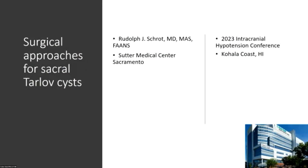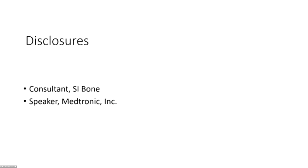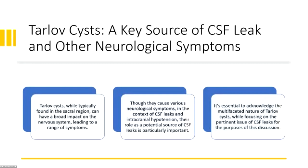I'm a consultant for some things that really don't have to do with CSF leaks or Tarlov cysts, so they can be a source of CSF leak, but often they're coming to the clinic for other reasons. Typically they're found in the sacral region. They can have a broad impact — these sacral nerve roots are very multivalent in their activity: bowel, bladder, sensory, motor function. So patients have a lot of different symptoms. However, it is very important to think about these in the context of CSF leak and intracranial hypotension.